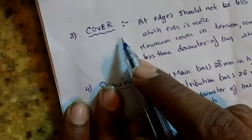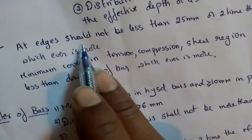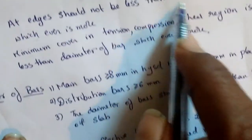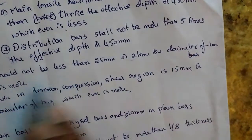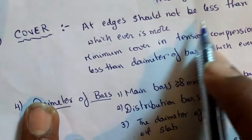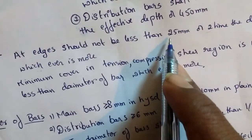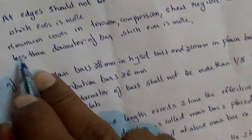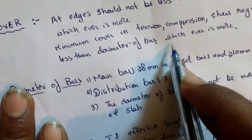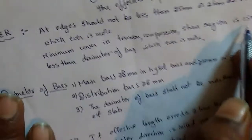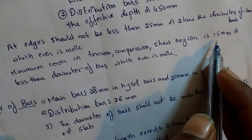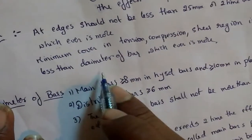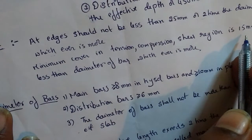Cover at the edges should not be less than 25 mm or two times the diameter of the bar, whichever is more. Minimum cover in tension, compression, and shear regions is 15 mm or the diameter of the bar, whichever is more.